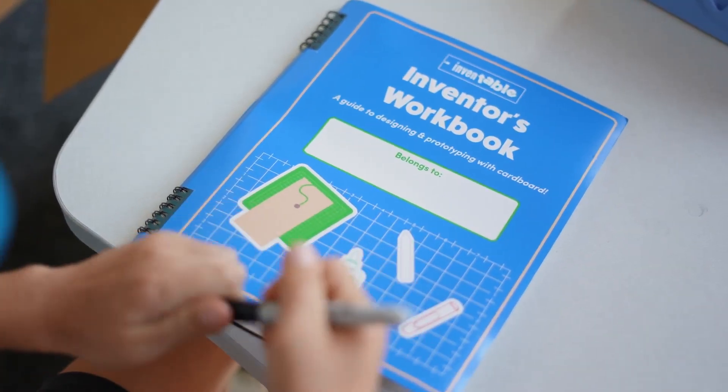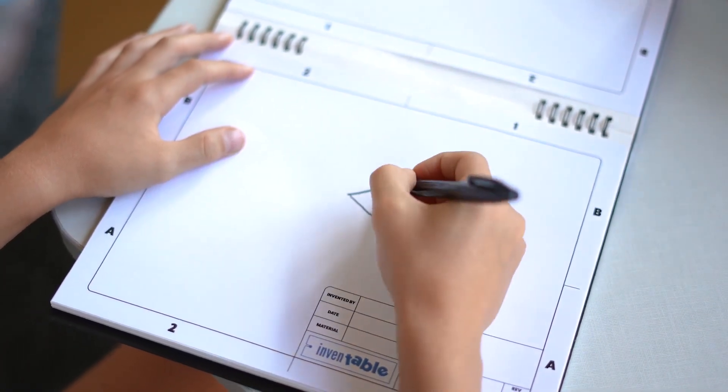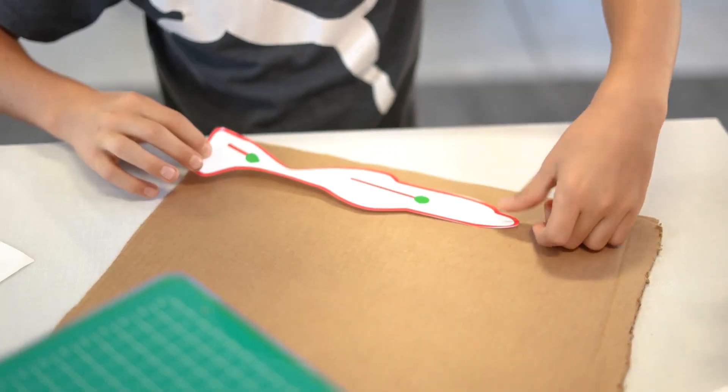In our STEM bundle, the Inventable also comes with a workbook that teaches you how to think in 3D, plan cardboard projects, and has engineering drawing pages to sketch your ideas. It also comes with starter projects to get your creative ball rolling.